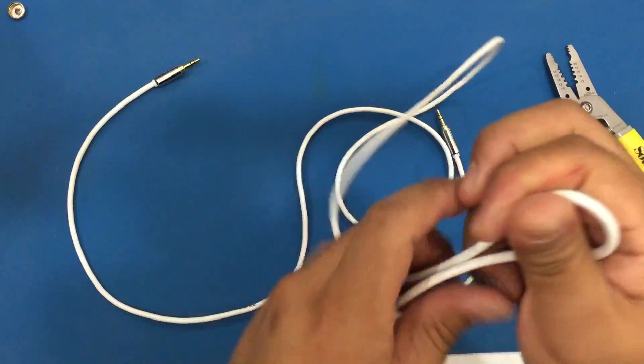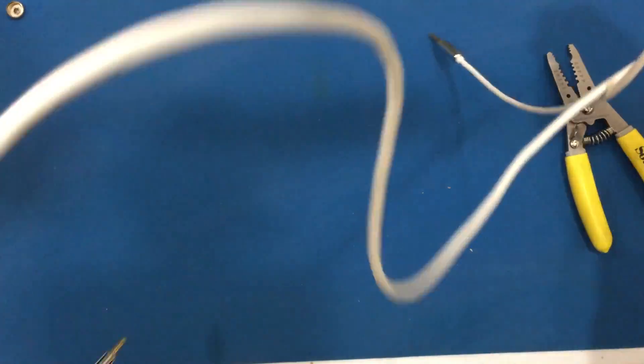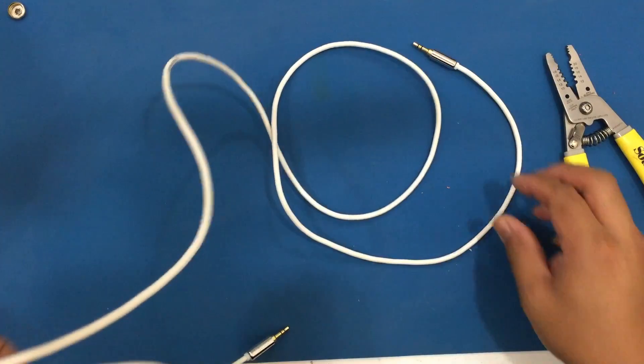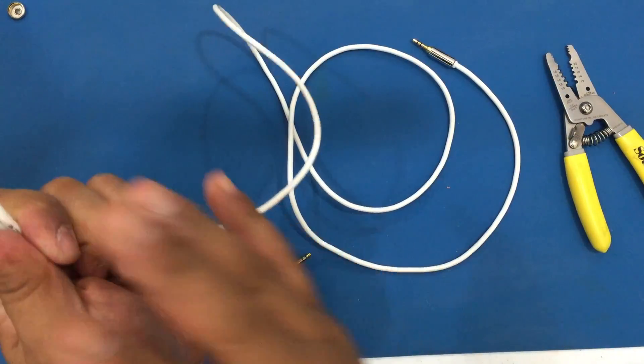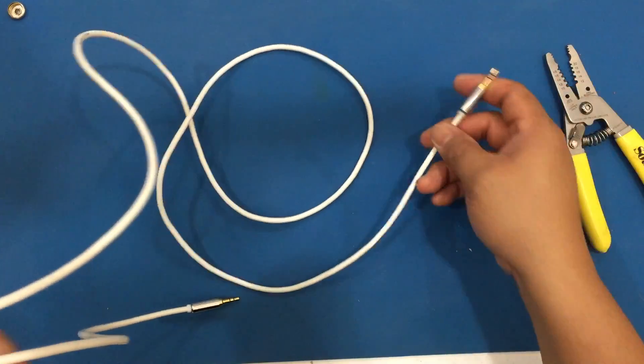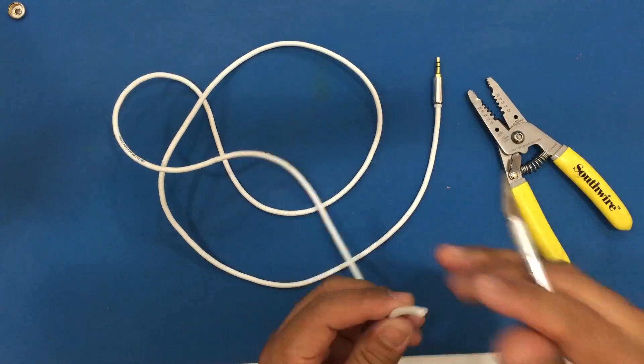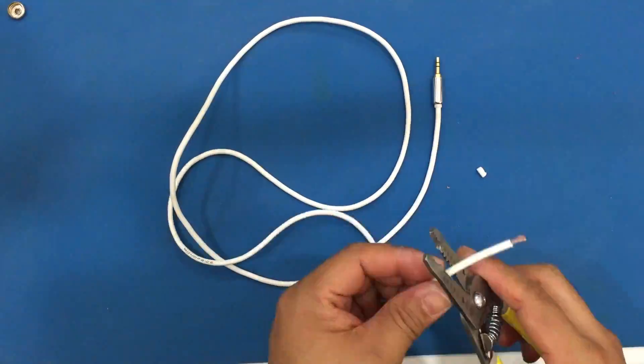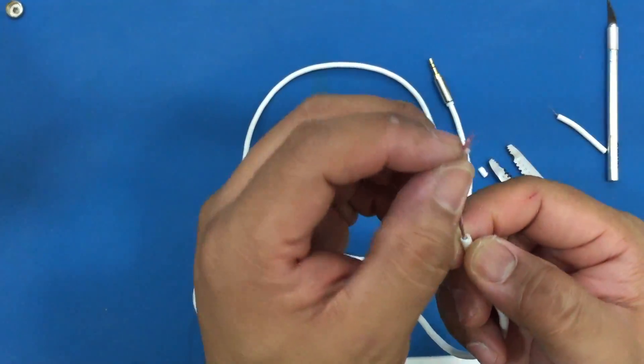Now I'm gonna cut about a four foot length from the TRS cable. You want the extra length because the cable is gonna go from the Framemeister to the VGA box instead of the VGA interface. Make sure not to damage the shielding.